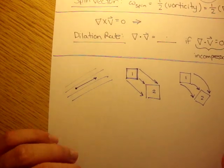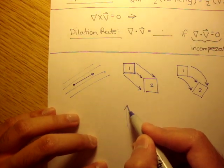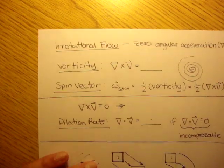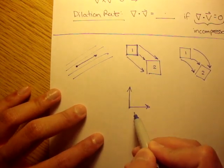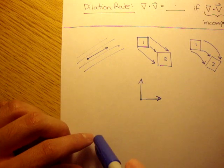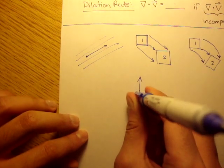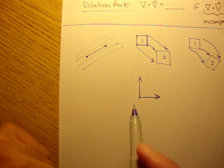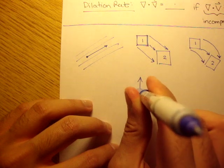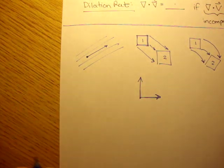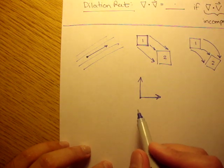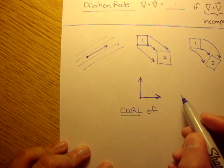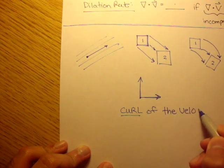A couple more things to point out. For a two-dimensional flow field, we know that vorticity is del cross v — it's a cross product. If you cross those two elements, the resulting vector would actually be out of the paper, perpendicular to the plane of the flow field. And vorticity is sometimes also referred to as the curl of the velocity field.